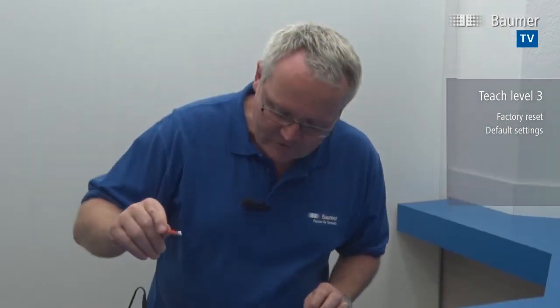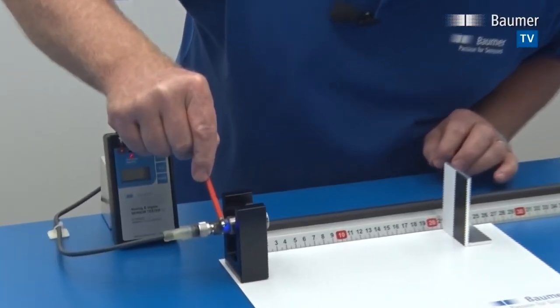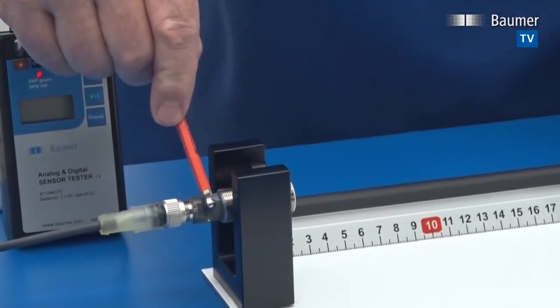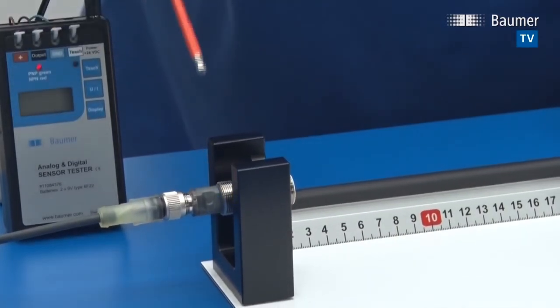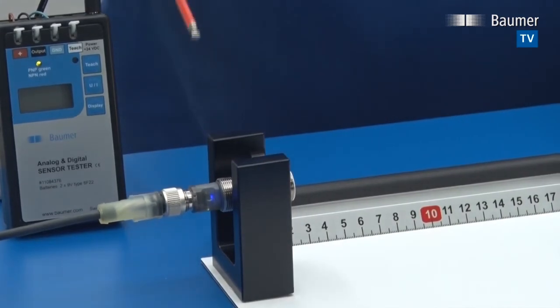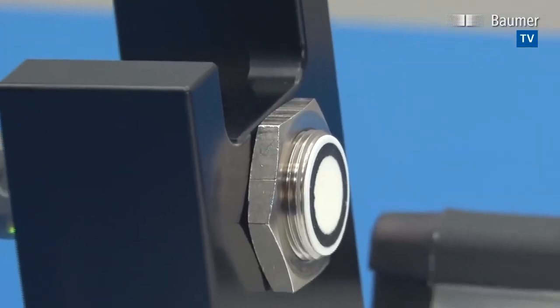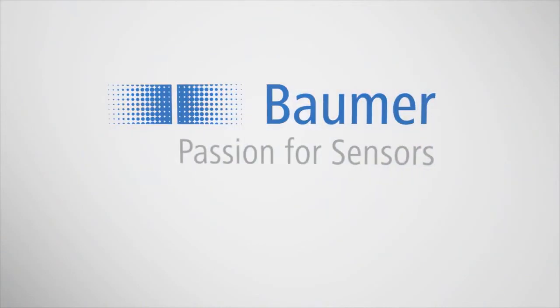Now let's attempt to set the sensor back into factory mode. In order to do that, we have to go into teach level three. We use QTeach again, past first level, past second level. Now a third level, it flashes very rapidly. We just have to remove the tool and the sensor has been set back into factory default settings. It's as easy as that. Thank you.